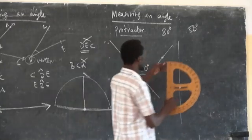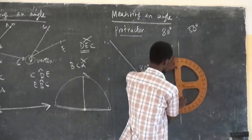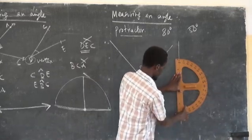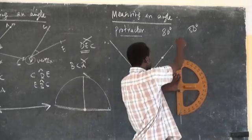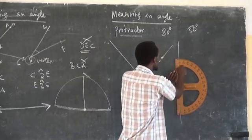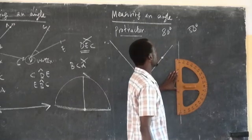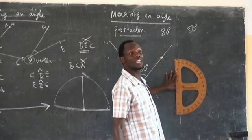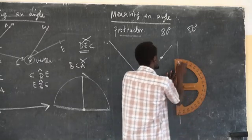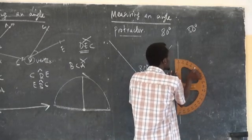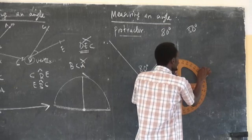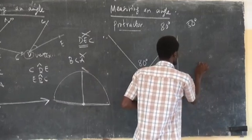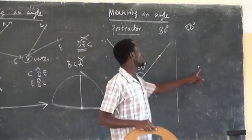Now, lay down your protractor. Making sure that this line passes through this point also. Now we are talking about 50 degrees. You start counting from zero — don't think about 180. Start from zero: 10, 20, 30, 40, 50. Put only the point at the mark of 50. A point only is enough. This is the point — it has been marked on 50 degrees.